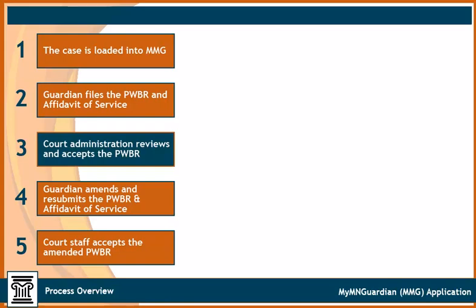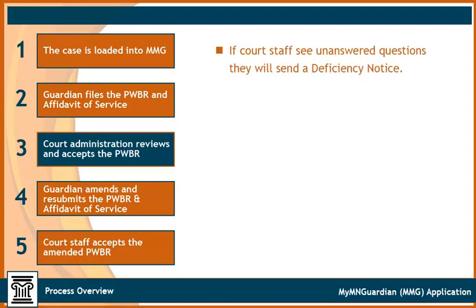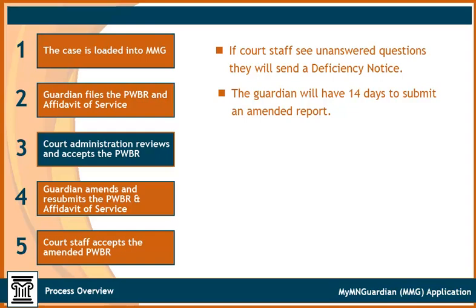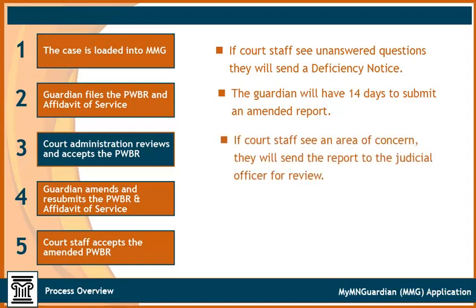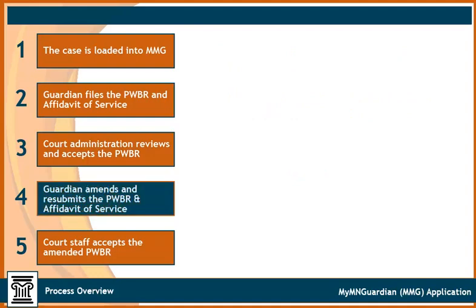Then, court administration reviews and accepts the personal well-being report. If court staff see unanswered questions, they will send the guardian a deficiency notice and the guardian will have 14 days to submit an amended report. If court staff see an area of concern, they will send the report to the judicial officer to review. The guardian then amends and resubmits the personal well-being report, if required. Finally, court staff accepts the amended personal well-being report.